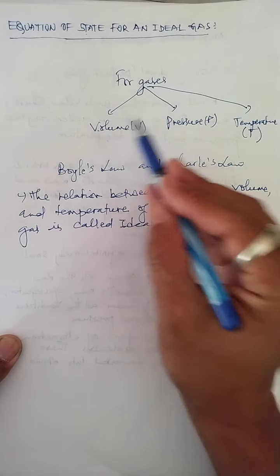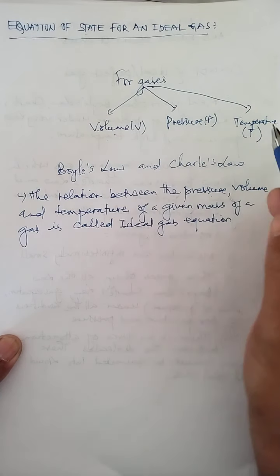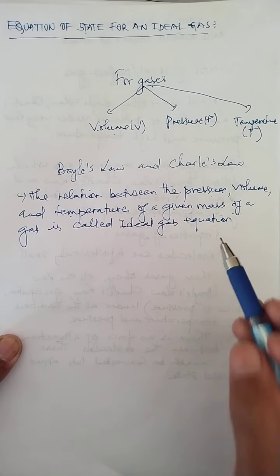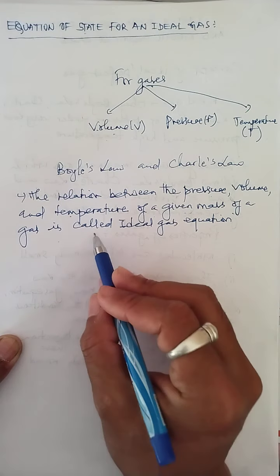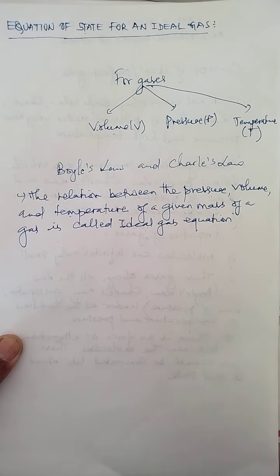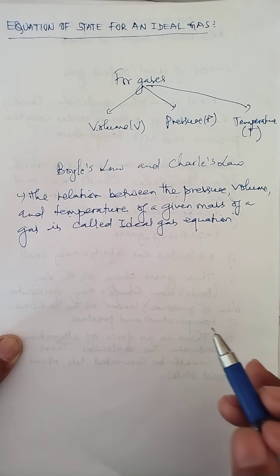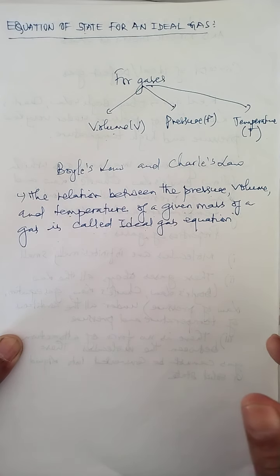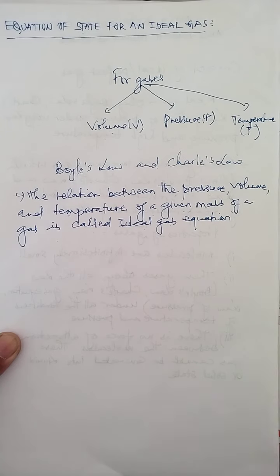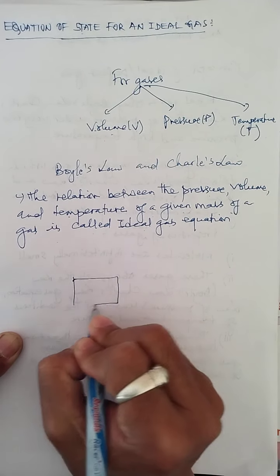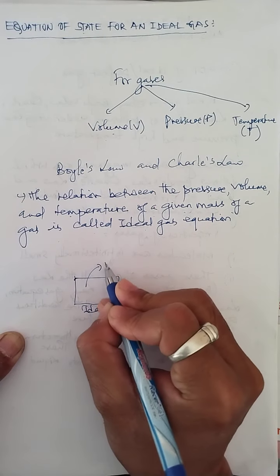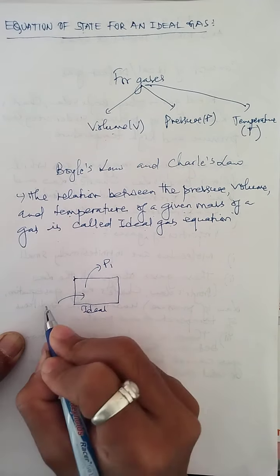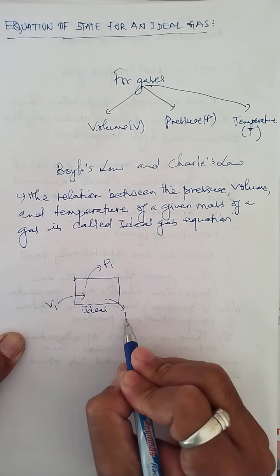The relation between pressure, volume, and temperature of a given mass of an ideal gas — a theoretical or imaginary gas — is what we call the ideal gas equation. Now to derive this ideal gas equation, by combining Boyle's Law and Charles' Law, let us consider an ideal gas which acquires an initial pressure P1, initial volume V1, and initial temperature T1.